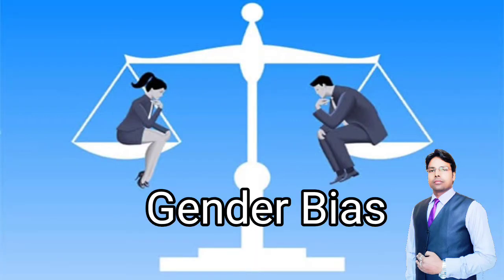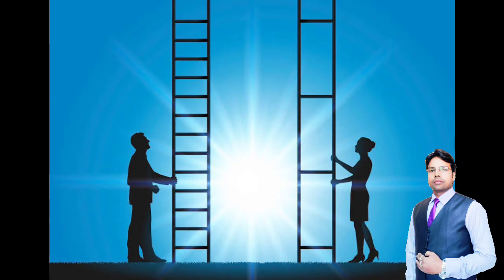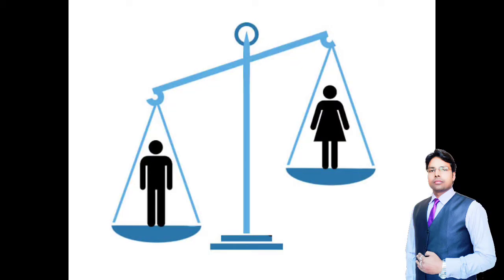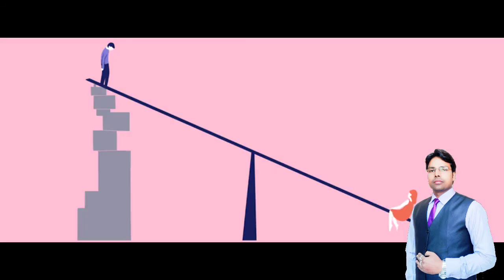Next is gender bias. In India, gender bias is found at a large level. More opportunities of education are given to the male members of the family. Male members are sent out for higher education, but less opportunities are given to female members of the family. Female members are not allowed to go out for higher education.